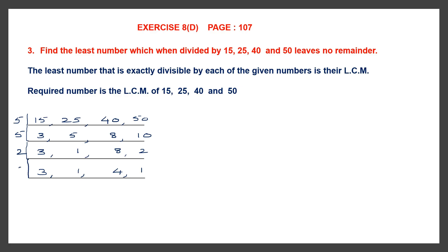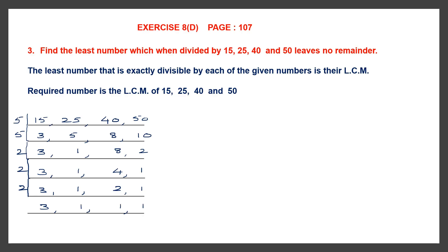We continue to divide by 2. So 3 comes down as it is, 1 also. Then 2 twos are 4 and 1 comes down as it is. Again by 2: 3 bring it down, 1 down, 2 ones are 2 and 1. Now the last step, we divide by 3. So we get 1 and everything else becomes 1.